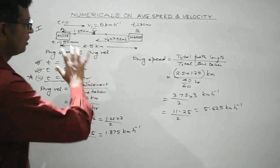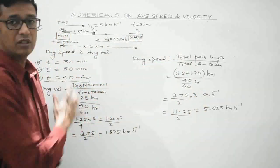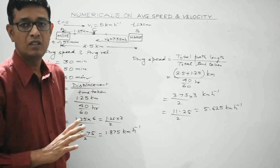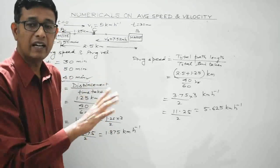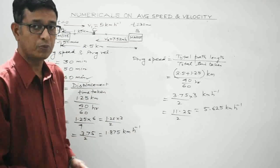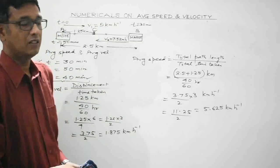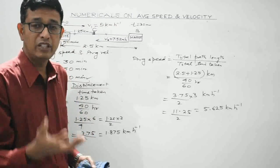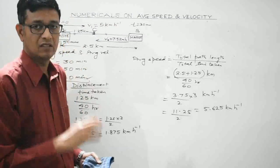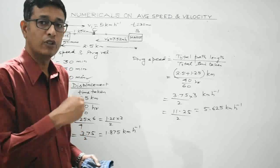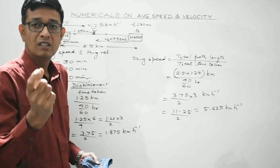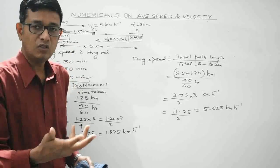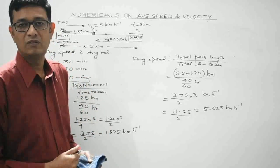This was a very important numerical that should clarify concepts of speed and velocity. When talking about speed we consider the actual path length, and when talking about velocity we consider displacement. When displacement is 0, average velocity is 0.